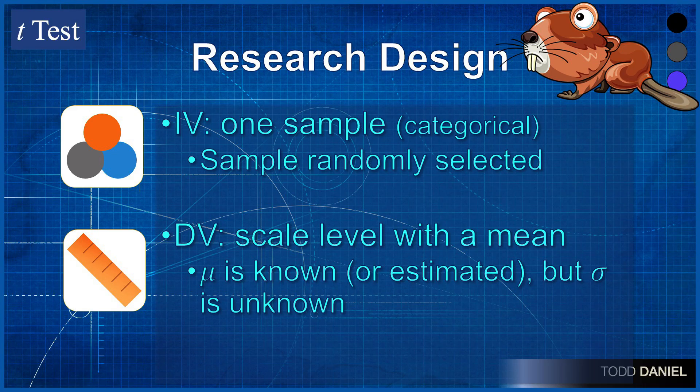The independent variable is one sample, which is categorical data. This sample has been randomly selected from the population. The dependent variable is a scale-level variable with a mean. The mean of the population is known or estimated, but the standard deviation of the population is unknown.